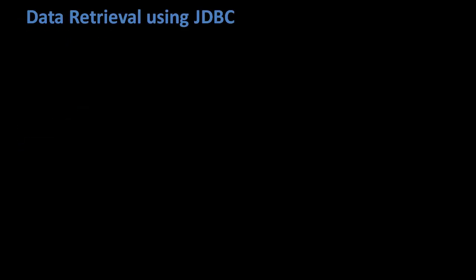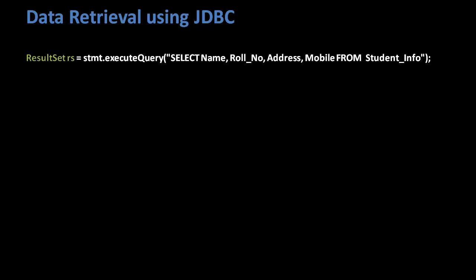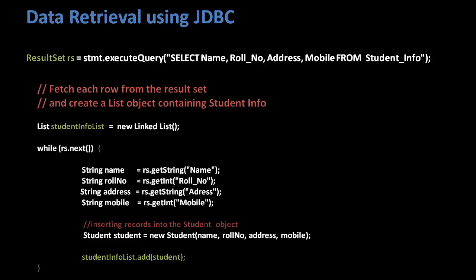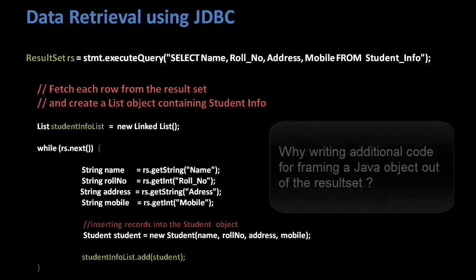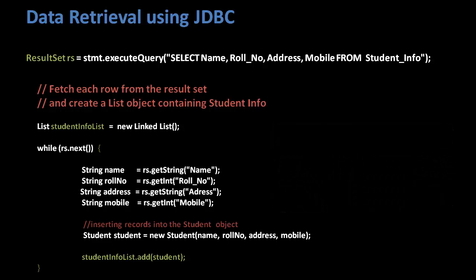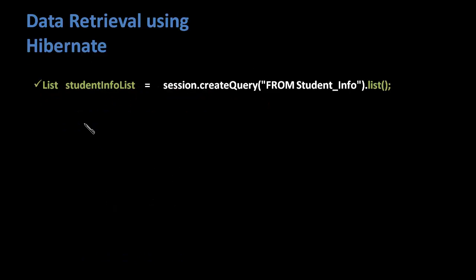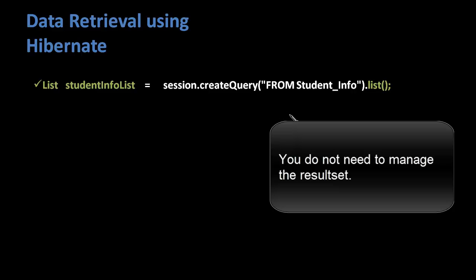Similarly, if you want to retrieve records from the student info table in your Java application, using JDBC you first get the result set and then frame a Java object — typically a collection object, for example a list — out of that result set. Hibernate says this is an overhead. Why write additional code to frame a Java object from a result set? Leave that job to me and I will directly give you a collection object or a Java object. So if you are using Hibernate, the same code would look like this — you do not need to manage the result set at all; you get a Java object directly containing the DB records.